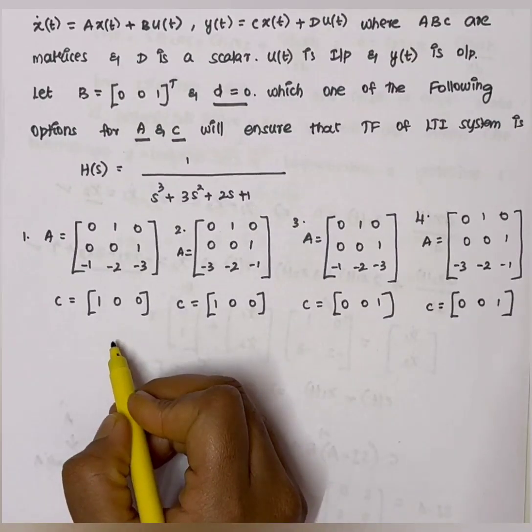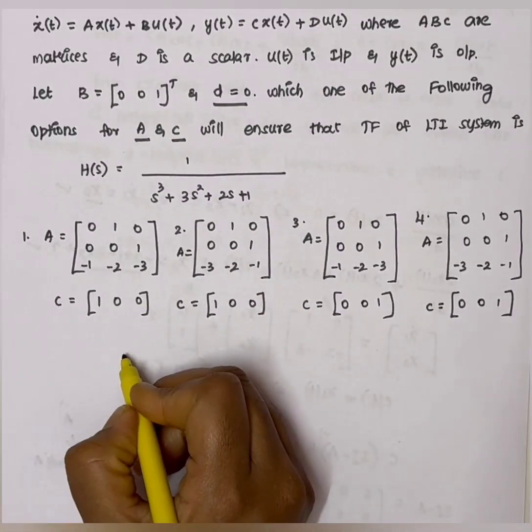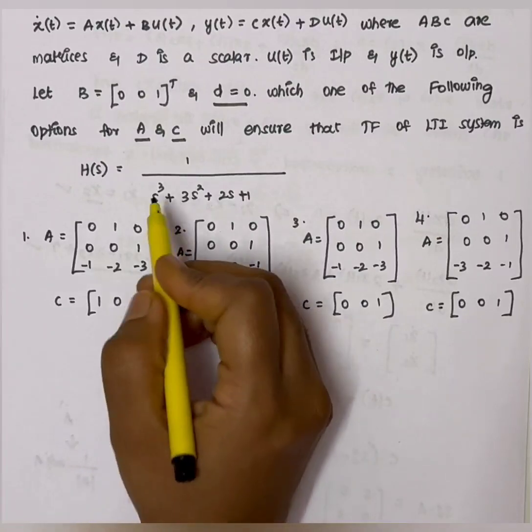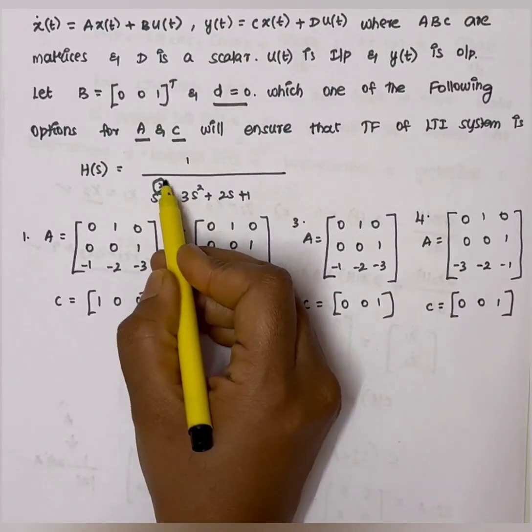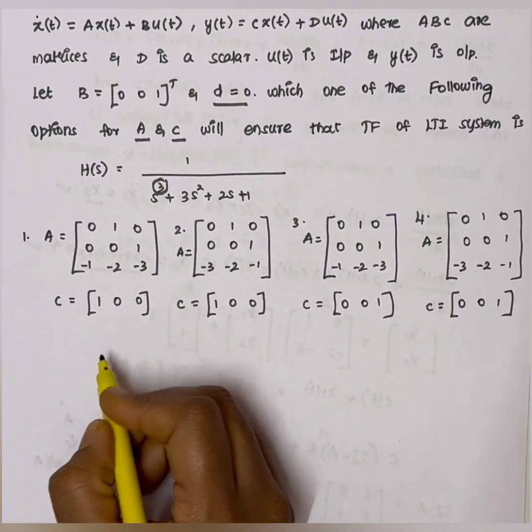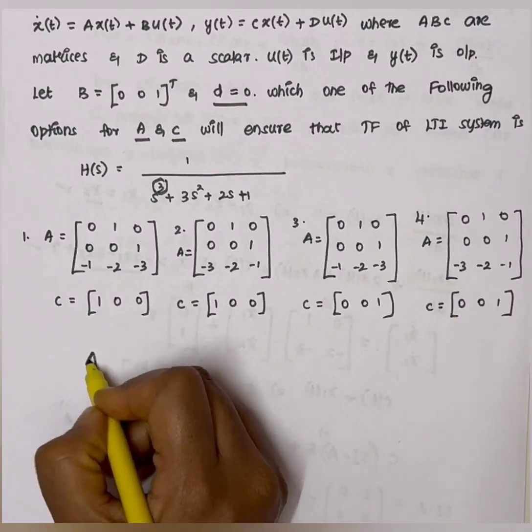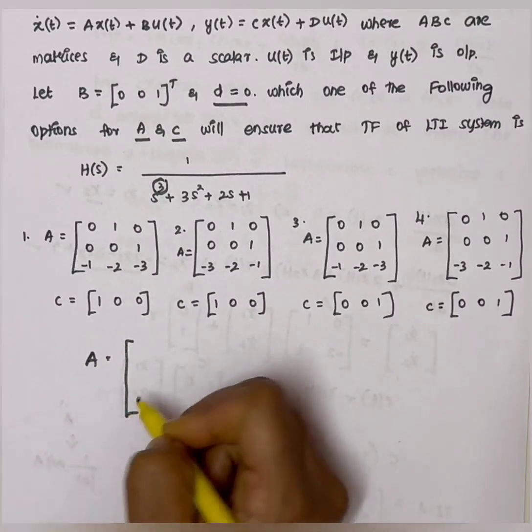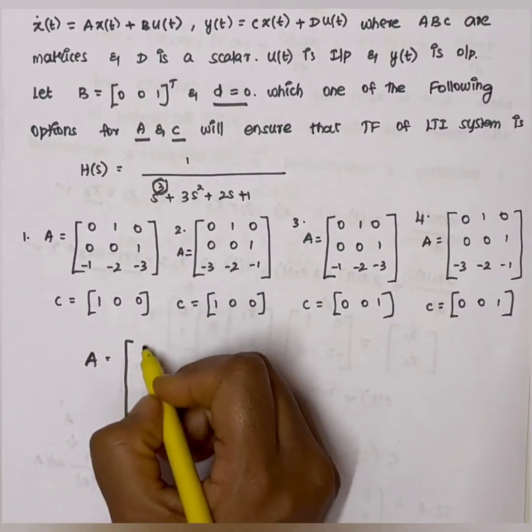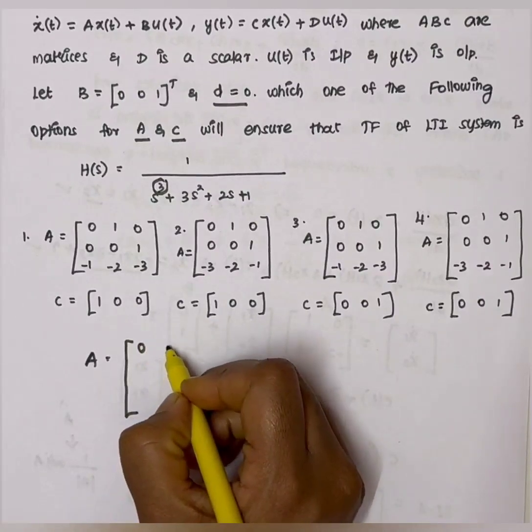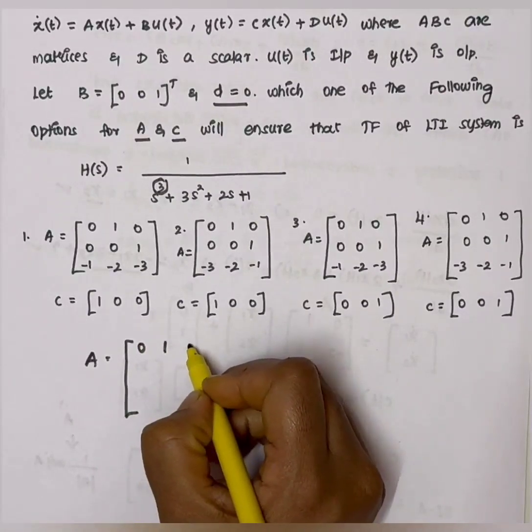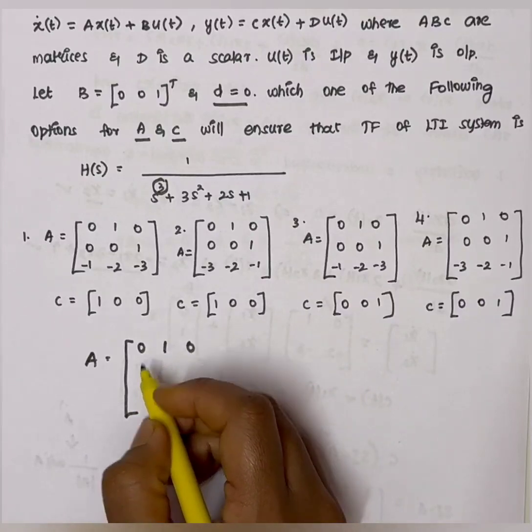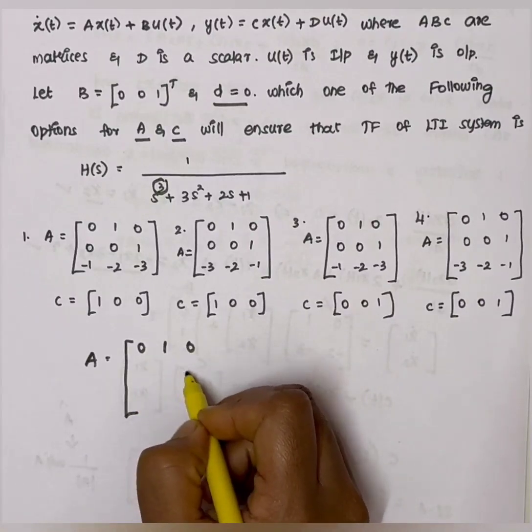For the transfer function, first we form the A matrix. We see here order 3, so we will use a 3 by 3 matrix. A equals, first row - how do we fill this? Start with 0, second value 1 followed by 0. If we fill this row, this 1 will be diagonal shift.